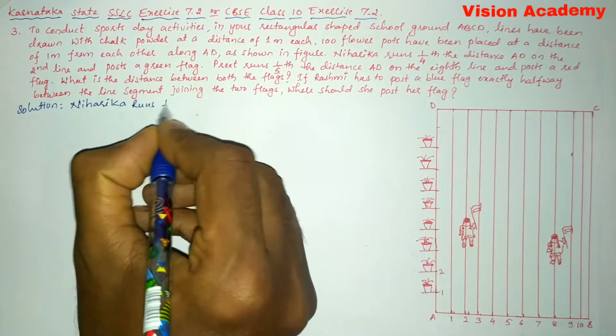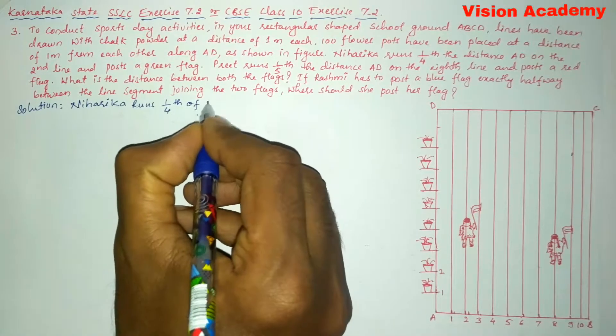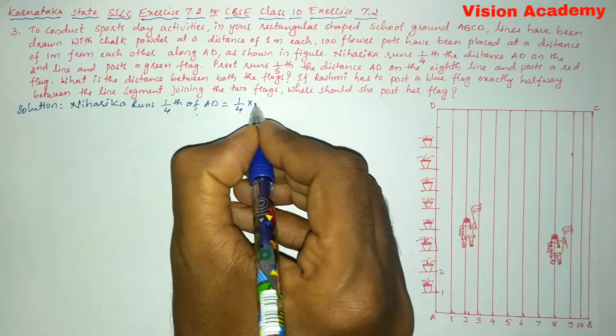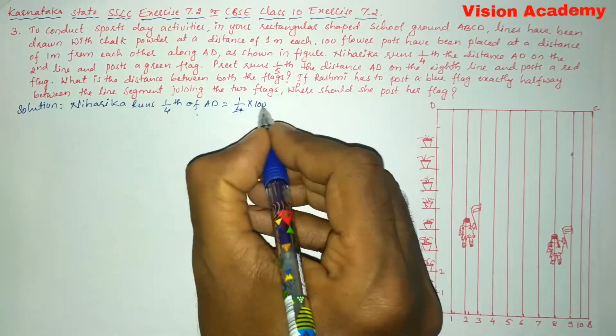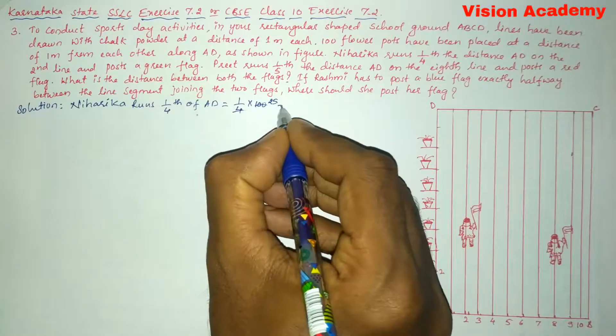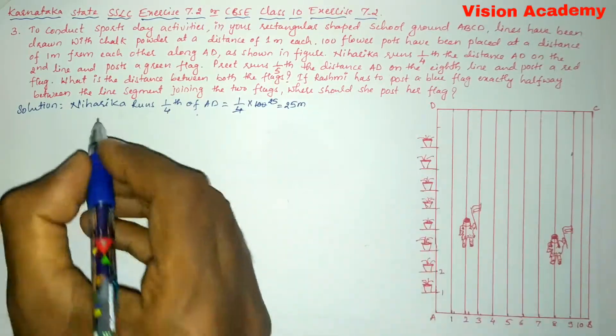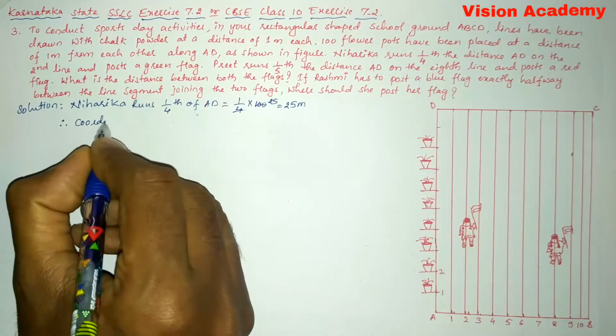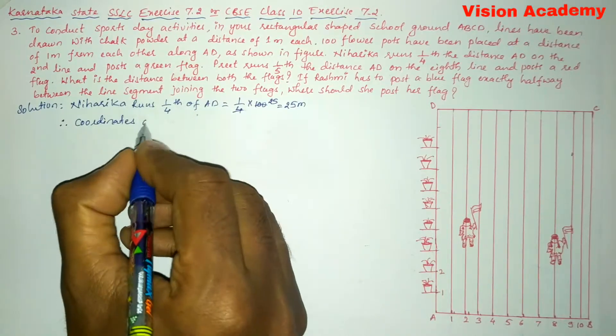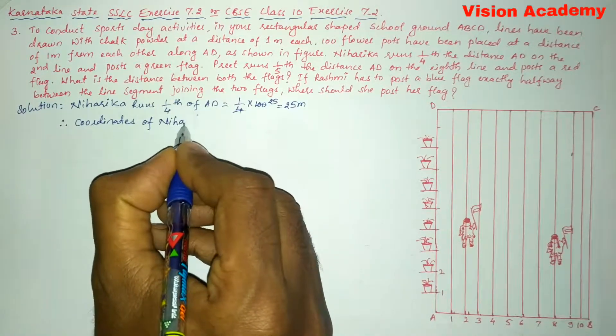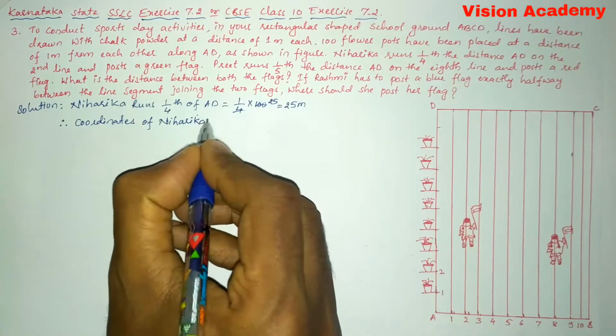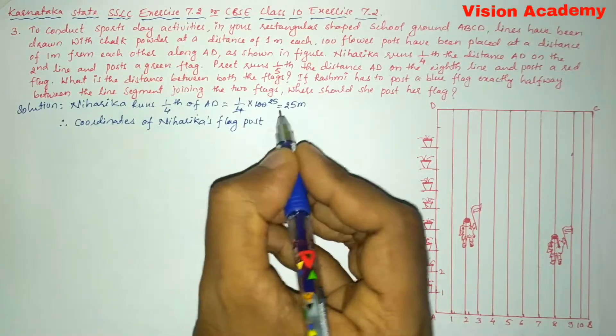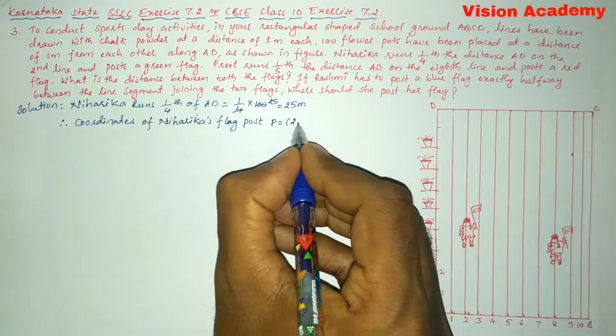Niharika runs one-fourth of AD, which equals one-fourth of 100. Four times twenty-five is one hundred, so this gives us twenty-five meters. Therefore, coordinates of Niharika's flag post, point P, is equal to (2, 25).